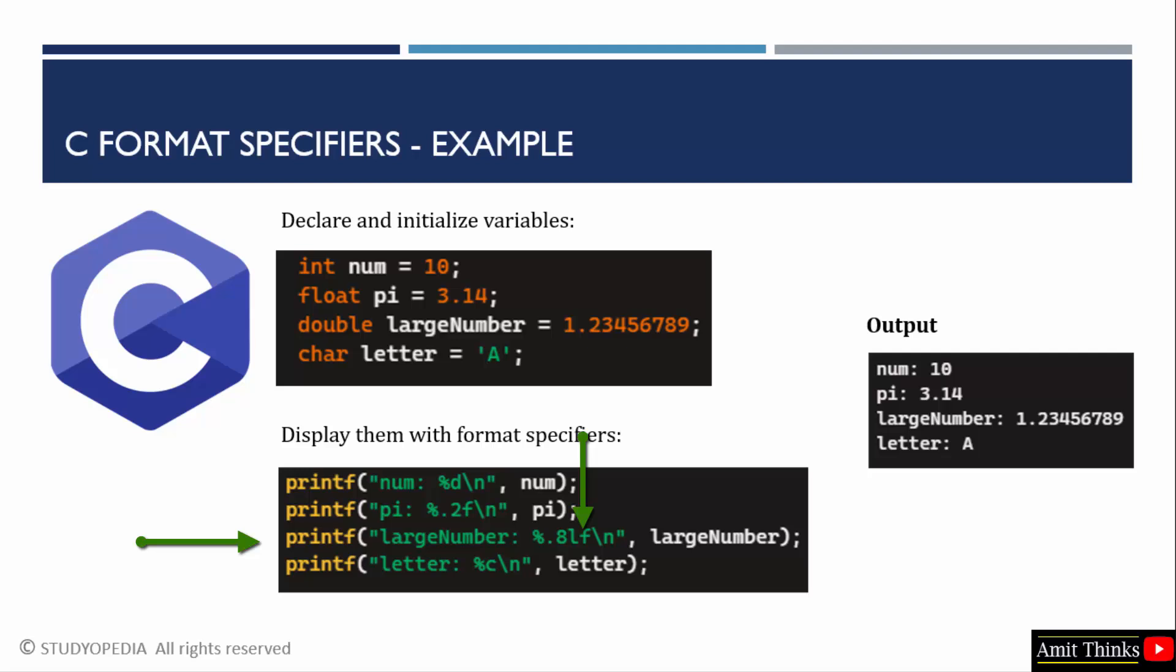.8lf means the format for printing a floating point number. The dot represents the precision. That is the number of digits to be printed after the decimal point. 8 specifies the precision. So, 8 digits will be printed after the decimal point. lf stands for long float and is used for printing double type numbers in C. This means .8lf will print a double value with exactly 8 digits after the decimal point.